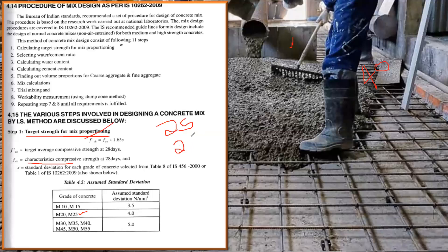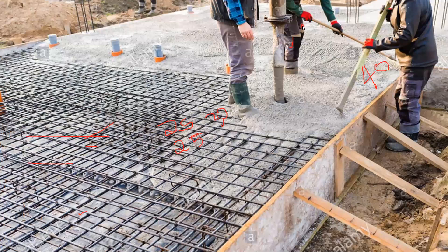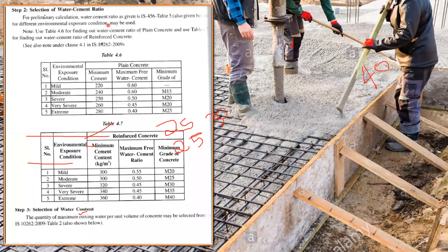So we calculate 1.65 × 4 and add it to 25. The reason we target a higher value is to be on the safe side — if the target is 25 N/mm², we design for at least 30 N/mm² so that at the construction site we achieve at least 25. That is why the formula uses fck + 1.65 × s as the target average compressive strength.